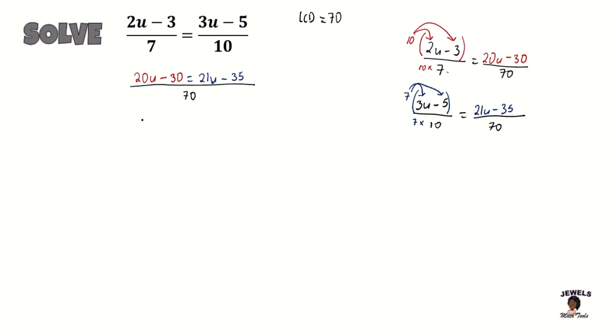So now that our fractions have their equivalent form and a common denominator, we can now eliminate our denominator and begin working out our fractions for our unknown term.